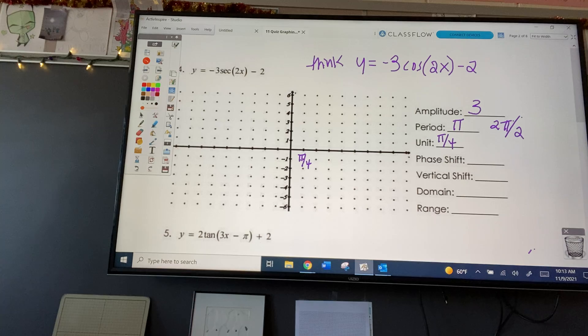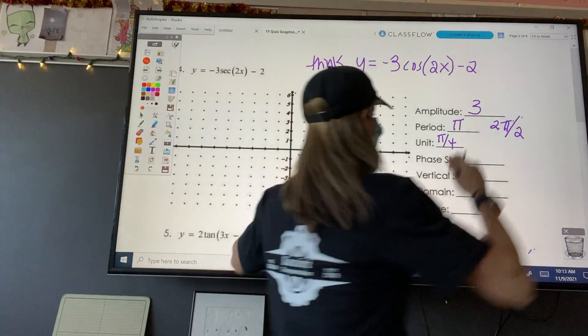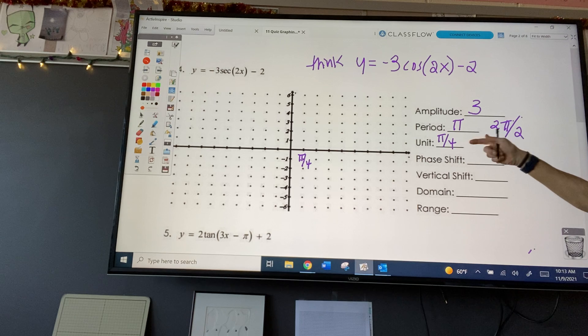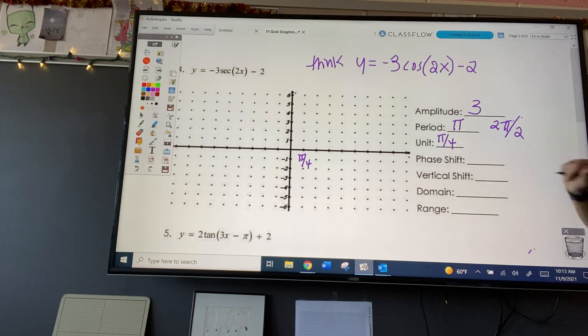Wait, how did you get the unit? Sorry. The unit, we're taking the period and we're chopping it up into nice four pieces. Oh, yeah. So we're just taking the pi and dividing it by four. Gotcha. I didn't show that, but that's how we got that.